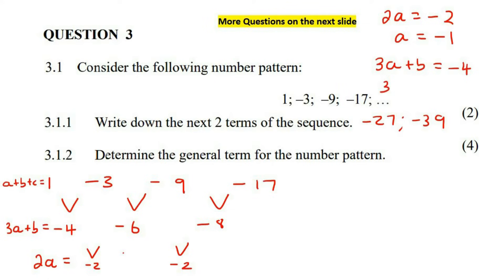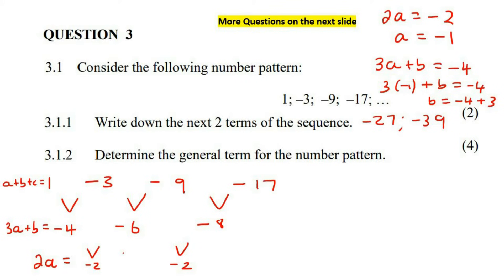So, 3 times A is negative 1, and then plus B equals to negative 4. Now we just solve. We end up with negative 4 plus 3, because this becomes negative 3 when taken to the other side. So B would end up being negative 1.